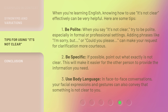Tip 2 — Be specific: if possible, point out what exactly is not clear. This will make it easier for the other person to provide the information you need. Tip 3 — Use body language: in face-to-face conversations, your facial expressions and gestures can also convey that something is not clear to you.